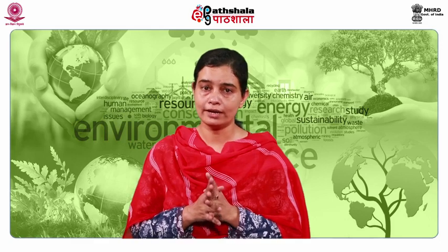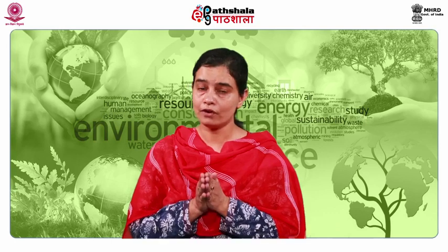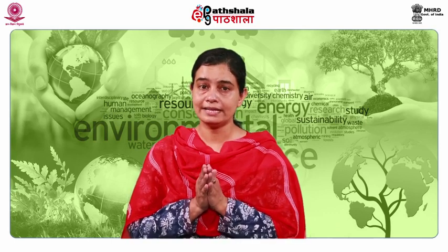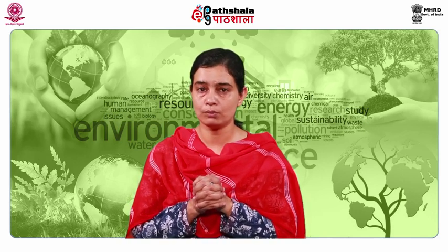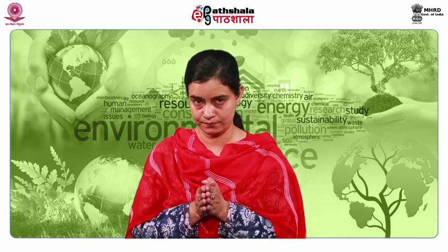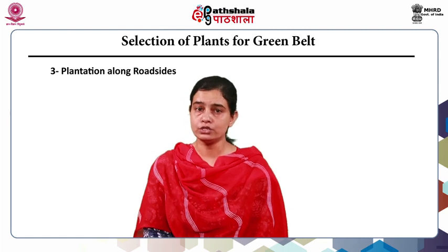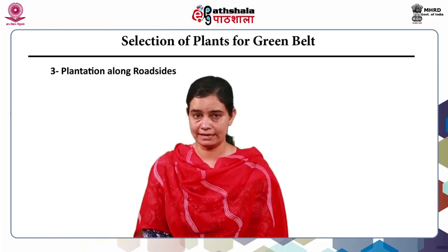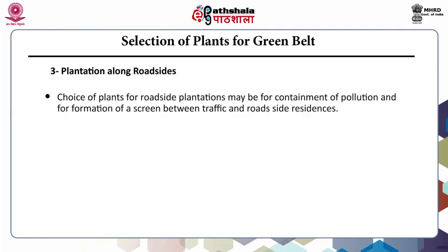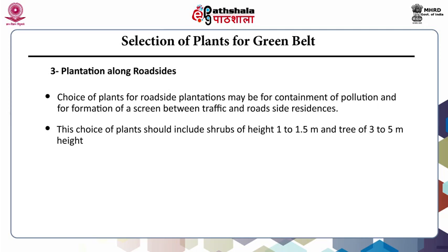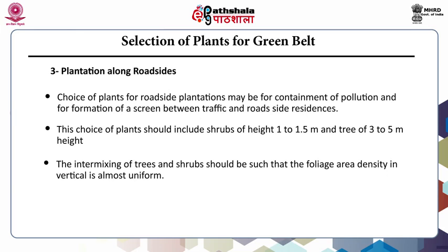It is not necessary that all tolerant plants are good for green belt development. For example, xerophytes with sunken stomata can withstand pollution by avoidance, but they are poor absorbers of pollutants due to low gaseous exchange capacity. For roadside plantation, components of green belts should be both absorbers of gases as well as dust particles including lead particulates. The choice of plants may be for containment of pollution and formation of a screen between traffic and roadside residences, and should include shrubs of height 1 to 1.5 meters and trees of 3 to 5 meters height, intermixed so that foliage area density in the vertical is almost uniform.